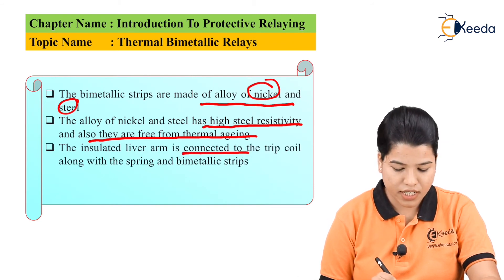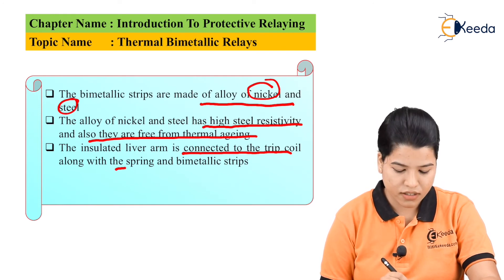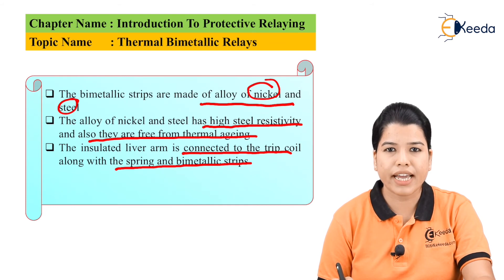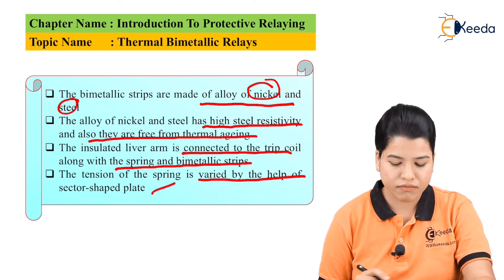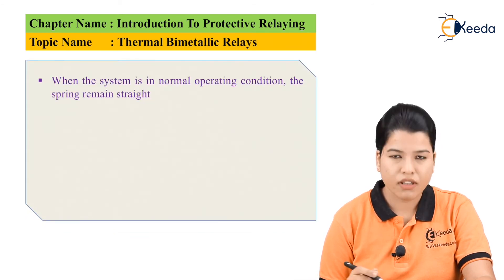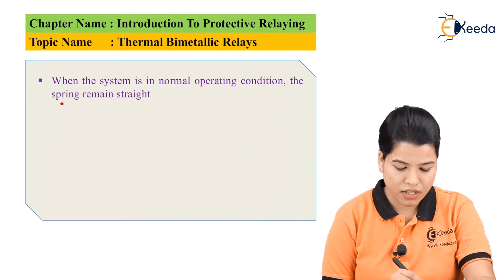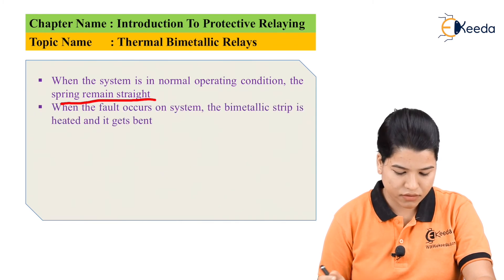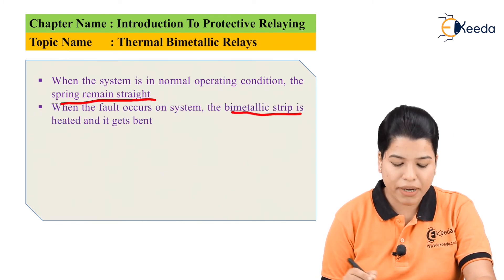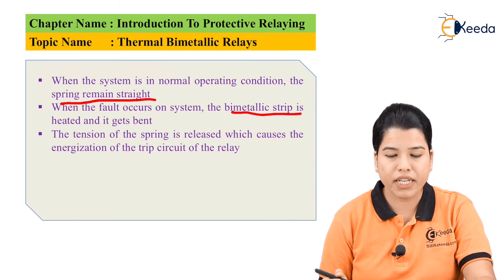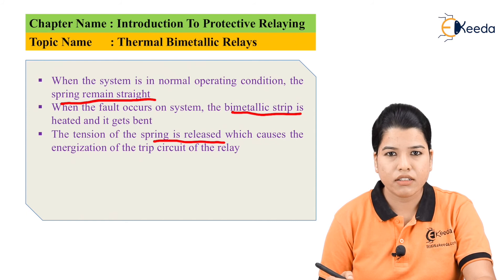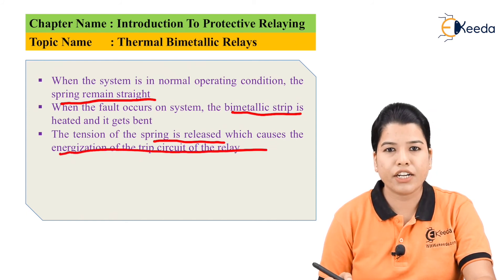The insulated lever arm is connected to the trip coil along with the spring and bimetallic strip. The spring holds the insulated lever arm away from the trip circuit under normal operating conditions, and the tension of the spring is varied with the help of a sector-shaped plate. When a fault occurs, the bimetallic strip gets heated and bends, releasing the tension of the spring and causing energization of the trip circuit of the relay.